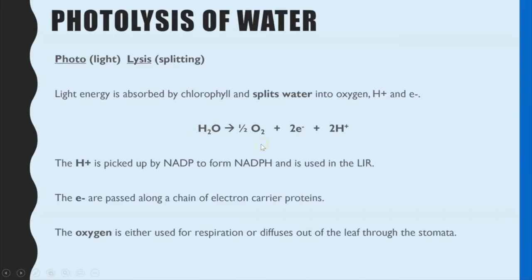The word or symbol equation shows that the water molecule is split into oxygen, electrons, and protons. The protons, which are hydrogen ions, are picked up by NADP — a coenzyme — and that is how reduced NADP or NADPH is formed, which is needed in the light independent reaction. The electrons are passed along a chain of protein carriers and they release energy. The oxygen is technically a waste product of photosynthesis; it could be used in respiration or it might diffuse out of the leaf through the stomata.